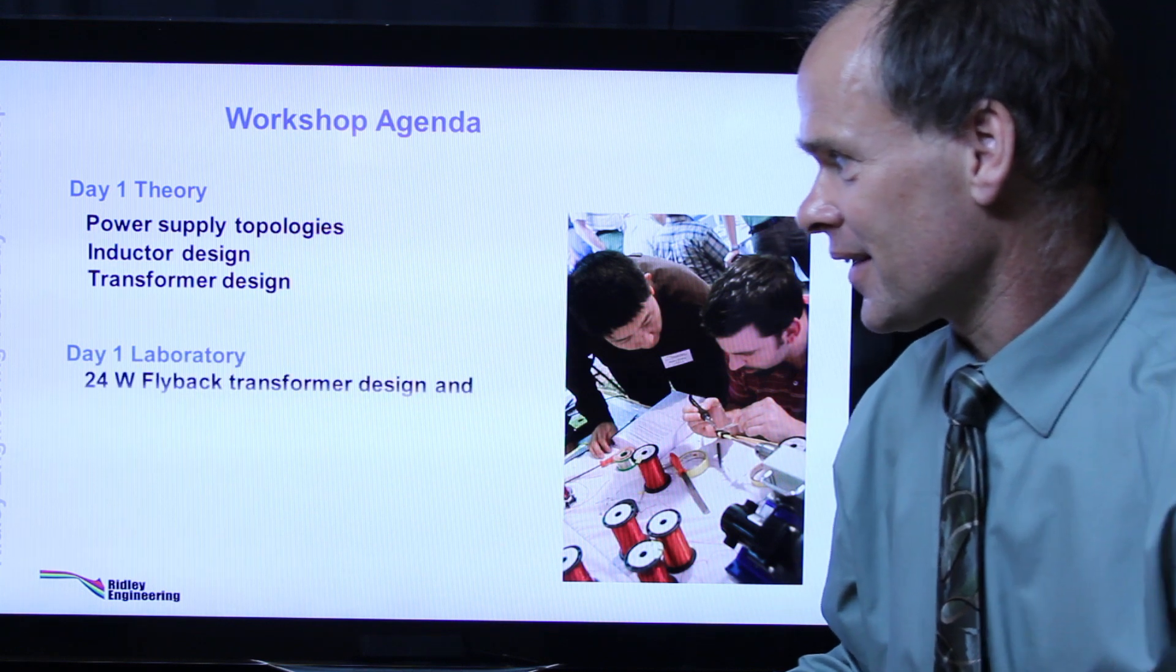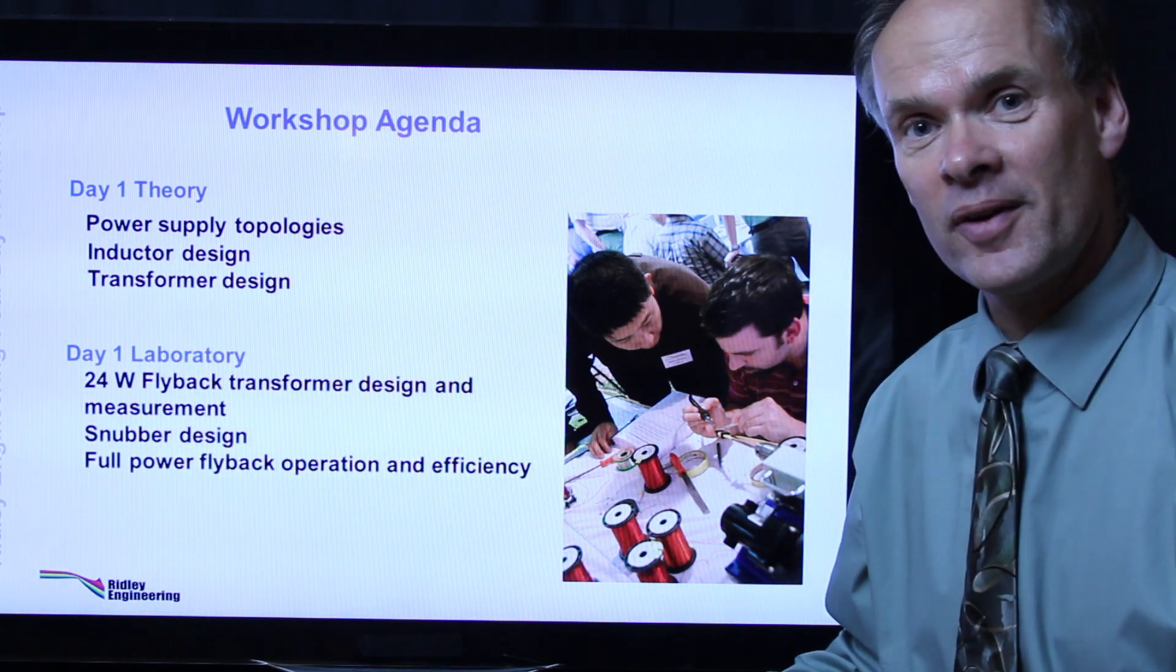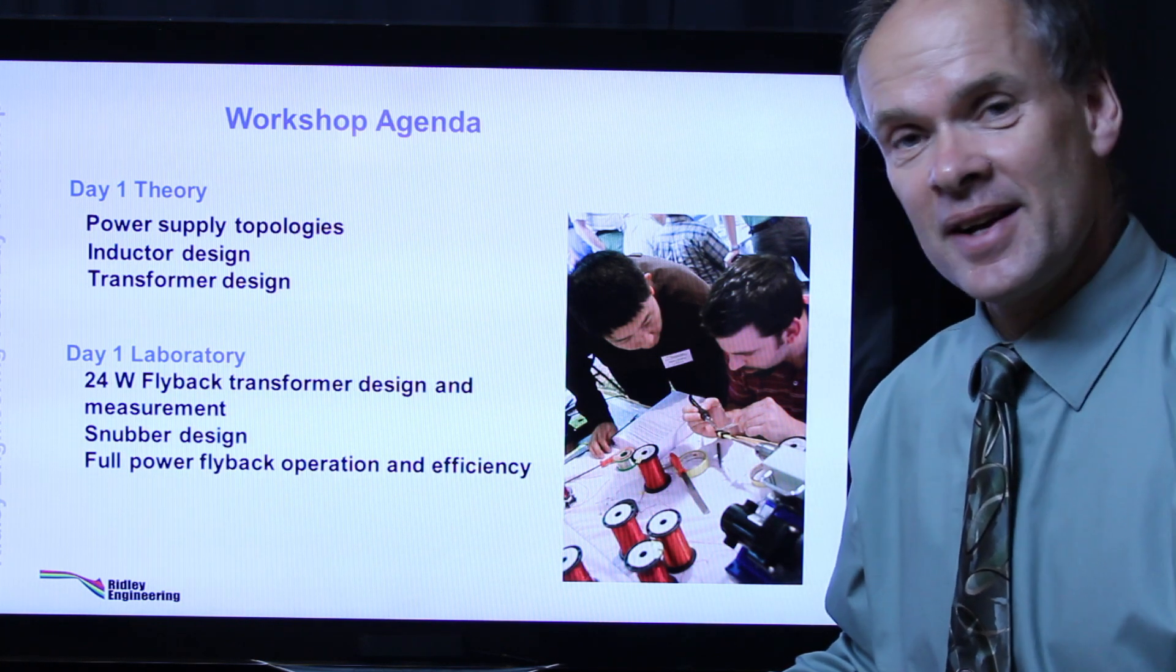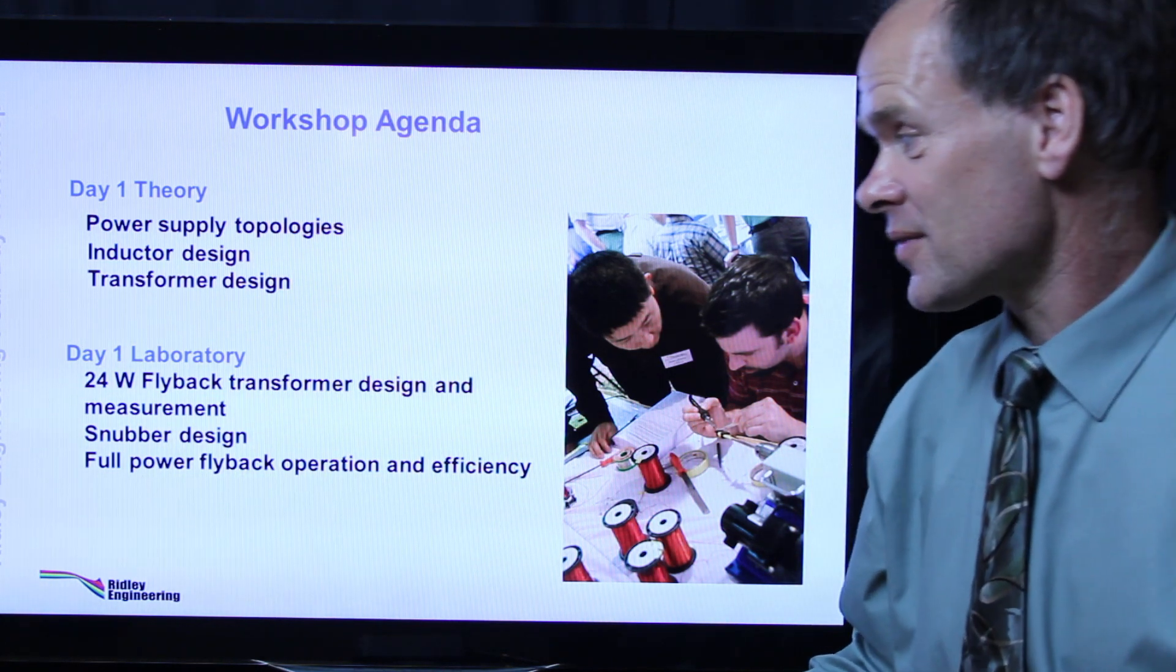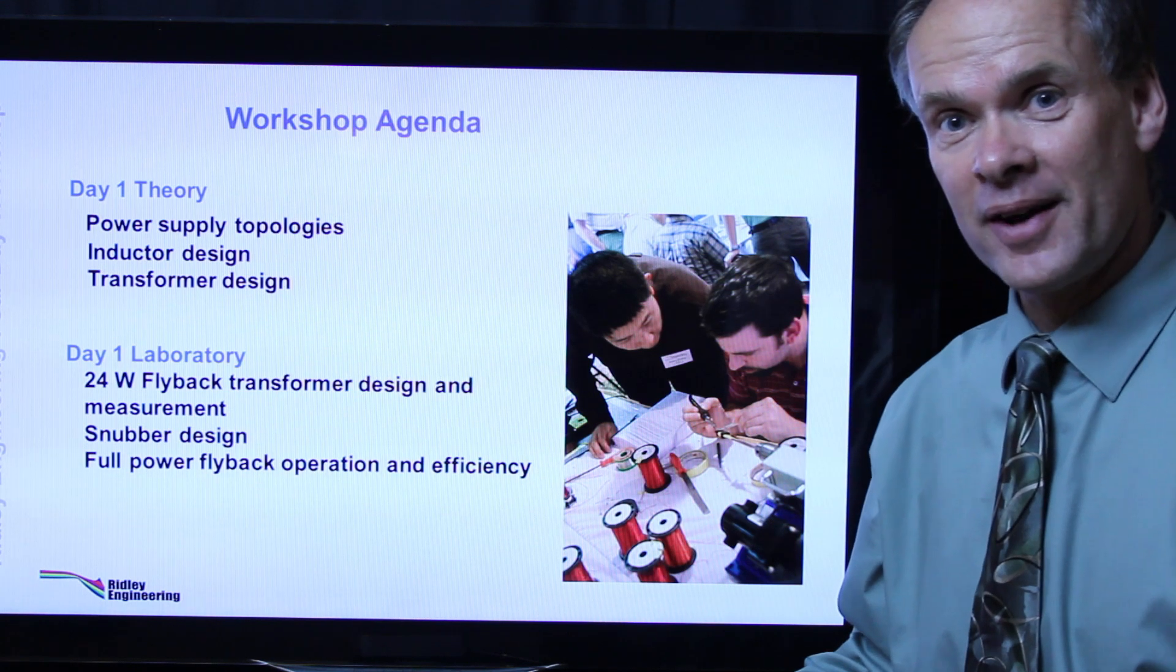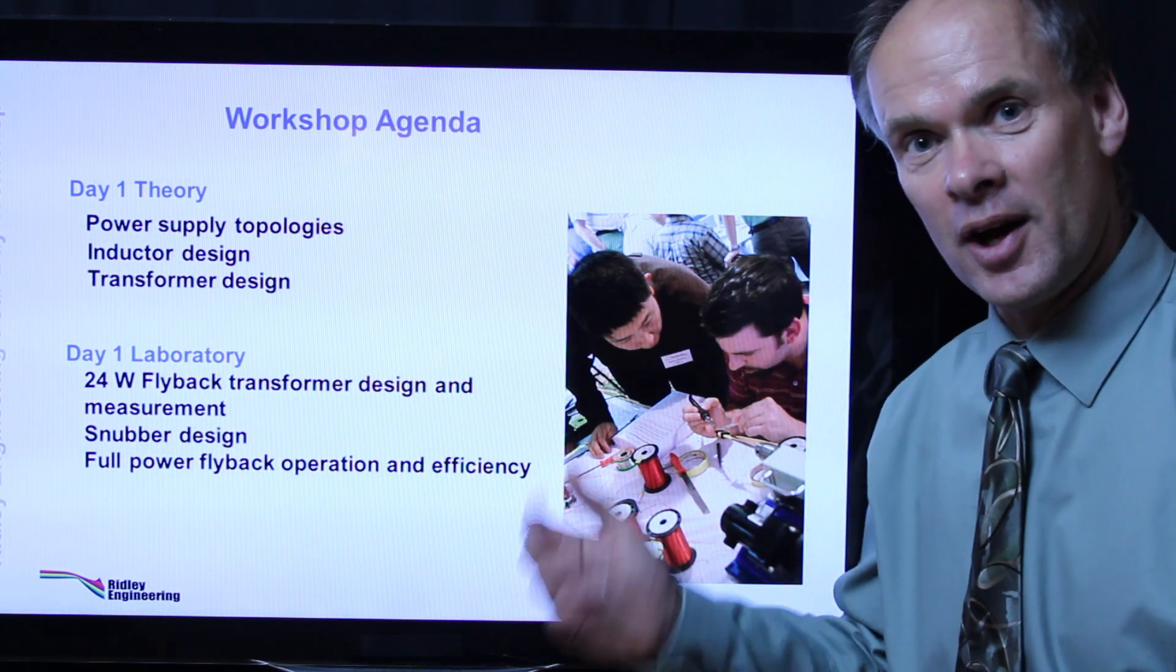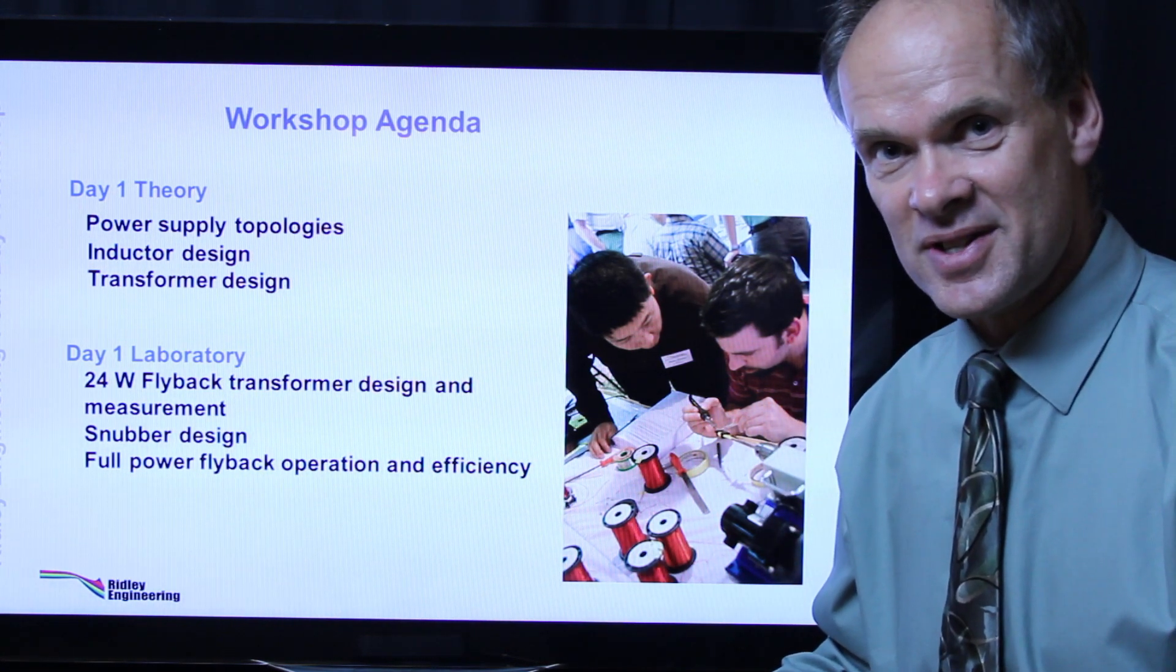In the afternoon in the lab you will build the transformer for a 24 watt flyback converter and you'll add snubber designs after you put the transformer in there and characterize it. Then by the end of just four hours of lab you will have a full power flyback converter operating and you'll measure the efficiency. Usually we have a little competition between the different benches to see who comes out with the best magnetic and the best overall efficiency.